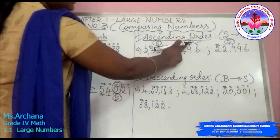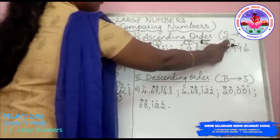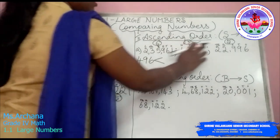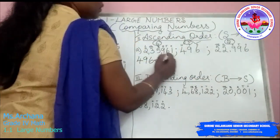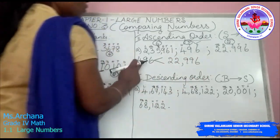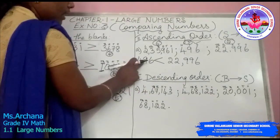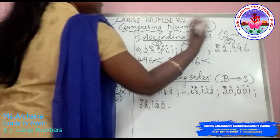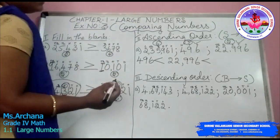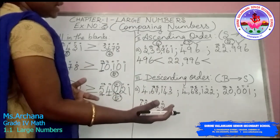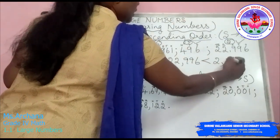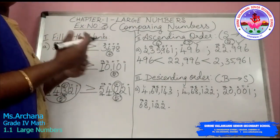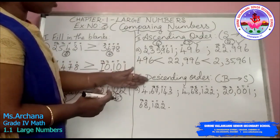So 496 is written first with the smaller-than symbol. Comparing the remaining two: one has 6 digits and the other has 5 digits. Since 5 is smaller than 6, 22,996 is the second smallest number. Finally, the 6-digit number 2,35,961 is the largest. So the ascending order is: 496 < 22,996 < 2,35,961.